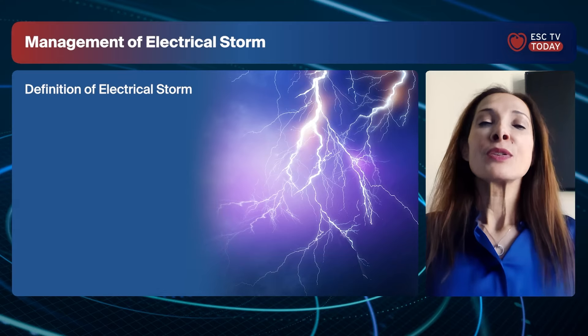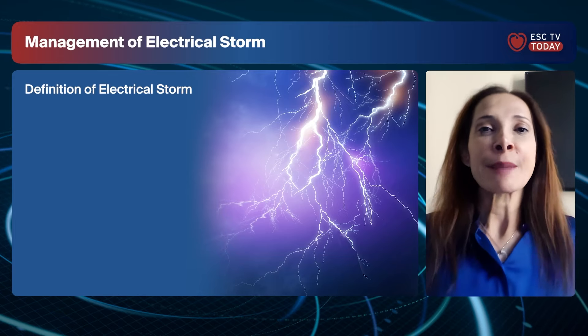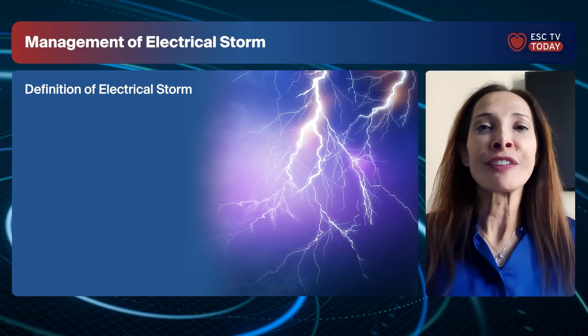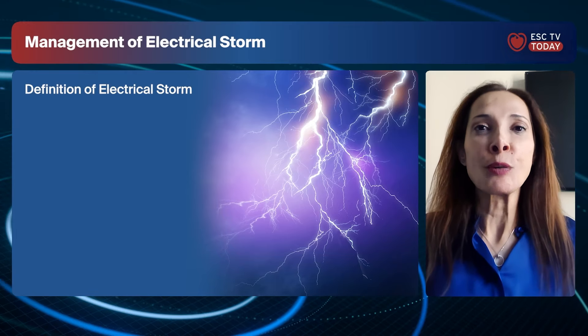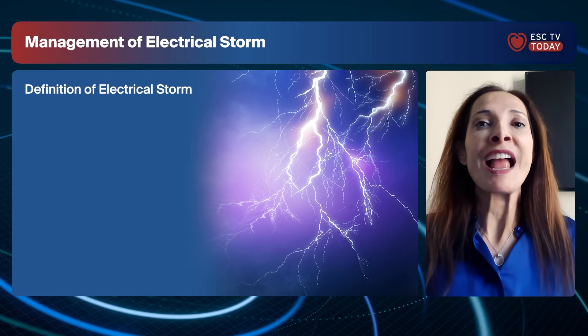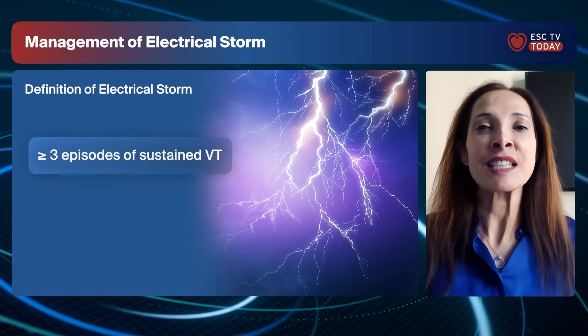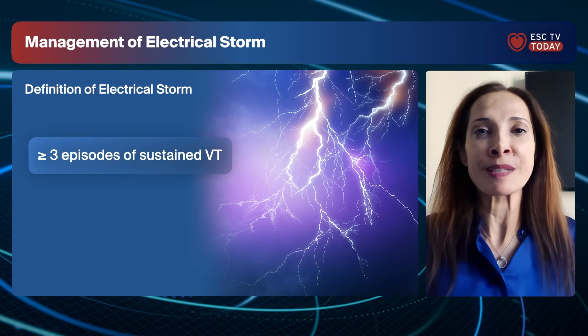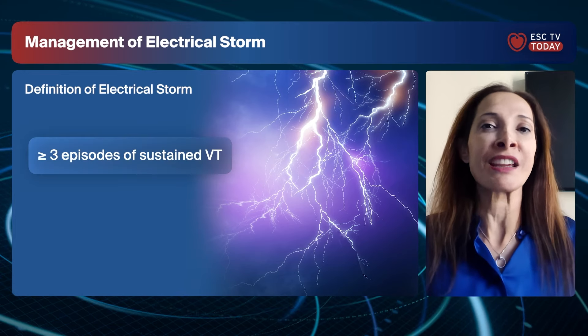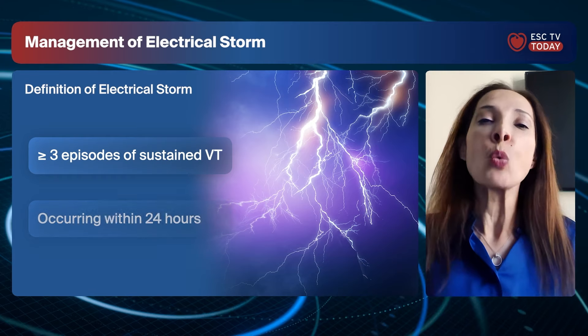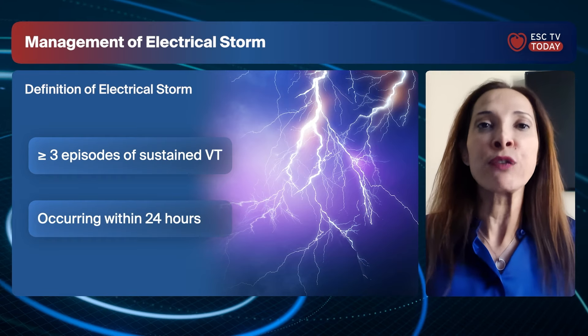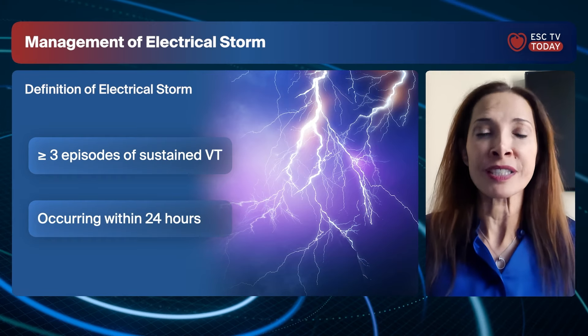What is an electrical storm? How do we define it, and what are the most frequent causes? The most well-accepted definition of electrical storm is when patients have at least three episodes of sustained ventricular tachycardia within a 24-hour period.